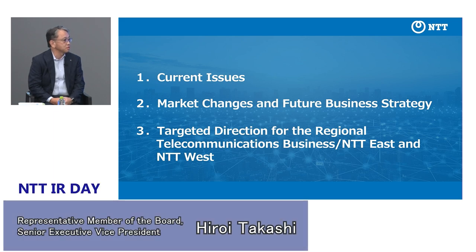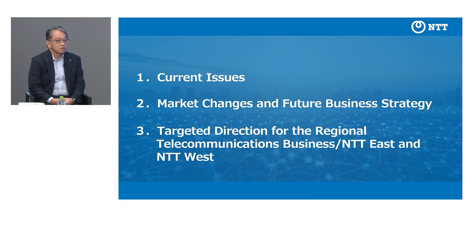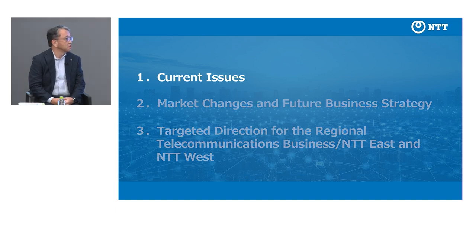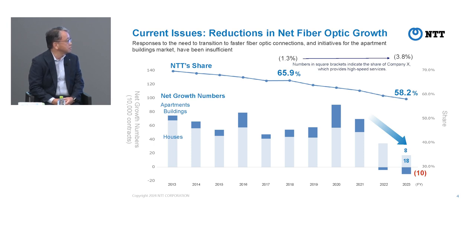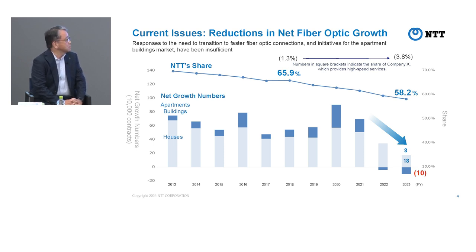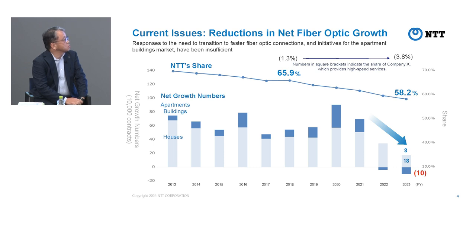Thank you very much. I'm joined today by Mr. Shibutani and Mr. Kitamura and we'll be talking about the future business strategy for the regional communication segment. I'd like to share two slides prepared for this program. The first talks about the reduction of net fiber optic growth — this is on a downward trend, and over 2022 to 2023 there was a very rapid reduction in net adds. Market share is also declining, but competitors' share is not increasing either. So what has happened to the marketplace? Why is Entity East and West fiber optic net increase reacting in this way?